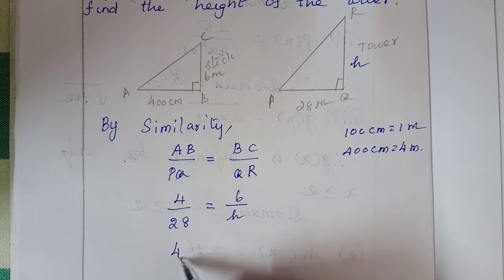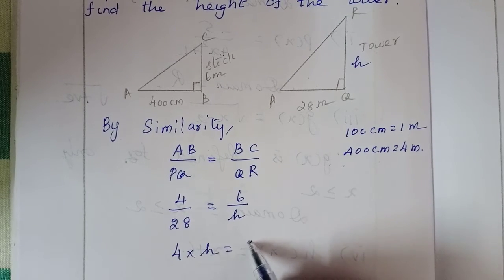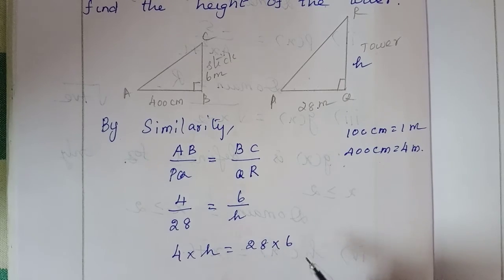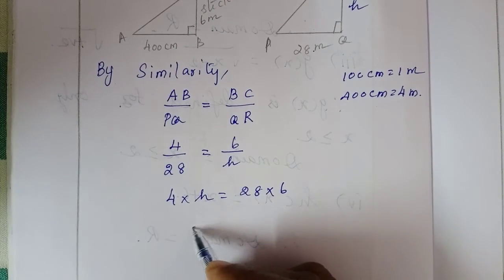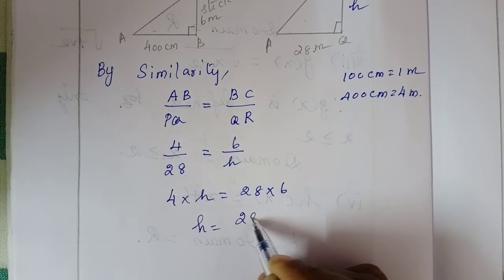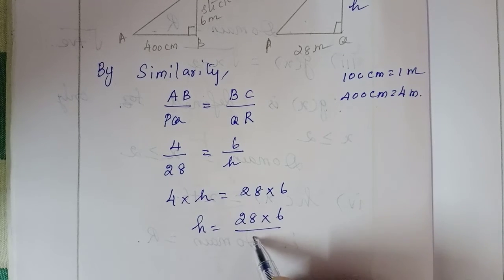Cross multiply: 4 into h is equal to 28 into 6.